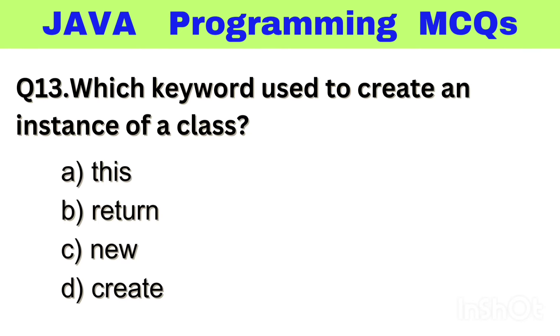Question number 13. Which keyword is used to create an instance of a class? Option A: This, B: Return, C: New, D: Create. The right answer is option C, New.